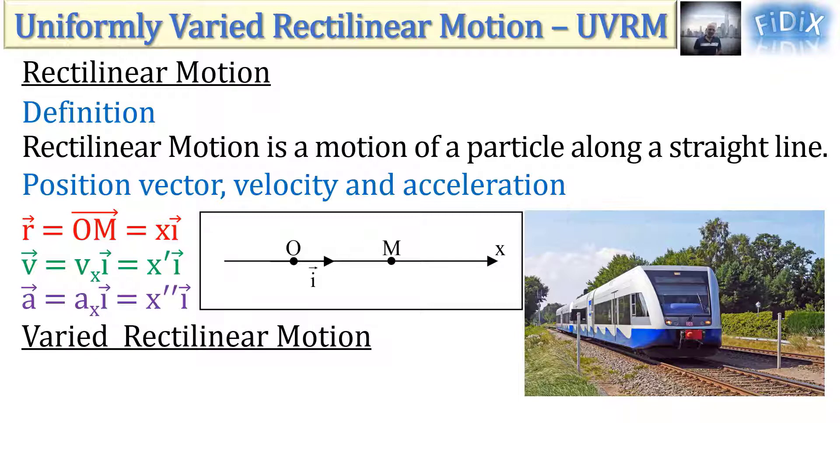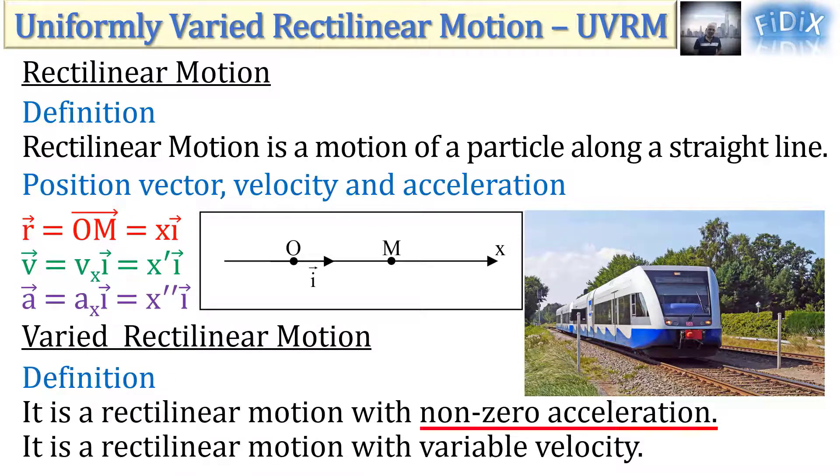The varied rectilinear motion is a rectilinear motion with non-zero acceleration or variable velocity.